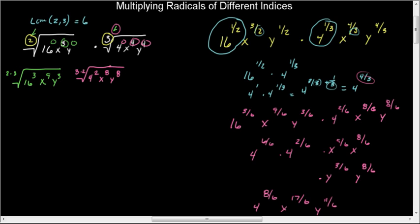Now, I have a common index. So I can combine them under the 6th root. And I have, this by the way is 16. 16 times 16 cubed is 16 to the 4th. x to the 9th, x to the 8th is x to the 17th. y to the 3rd, y to the 8th gives me y to the 11th.